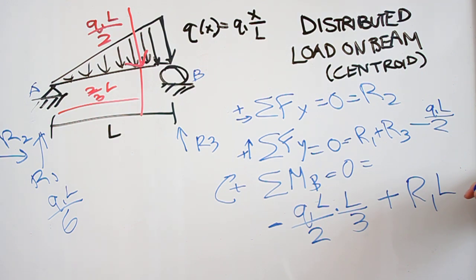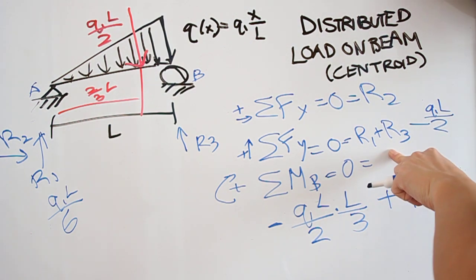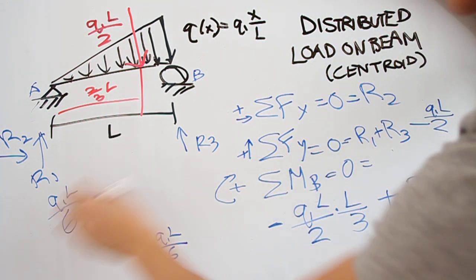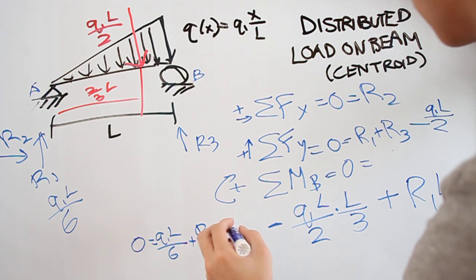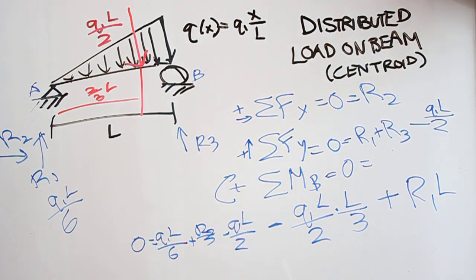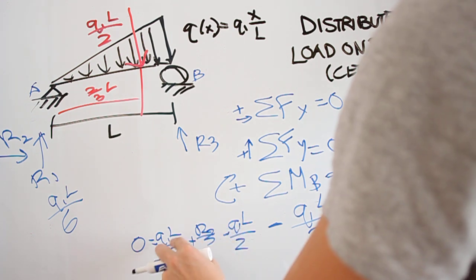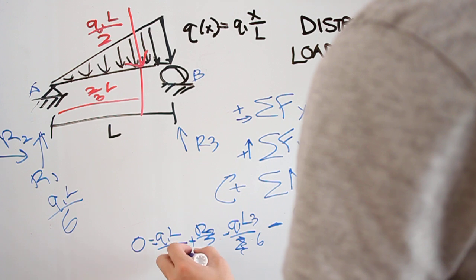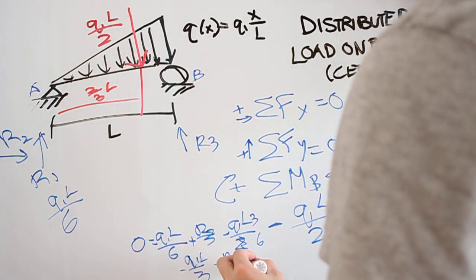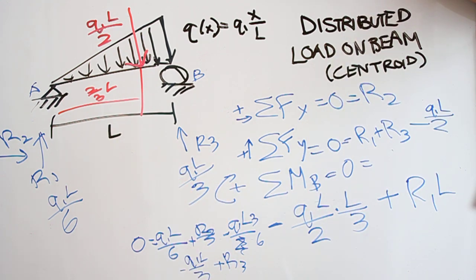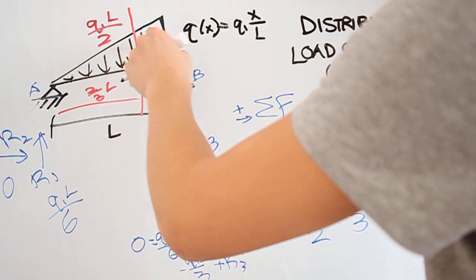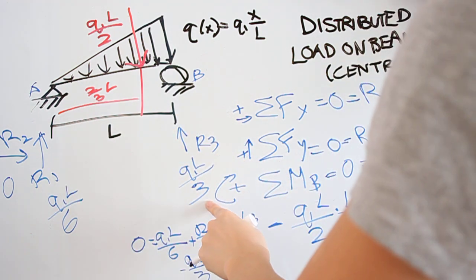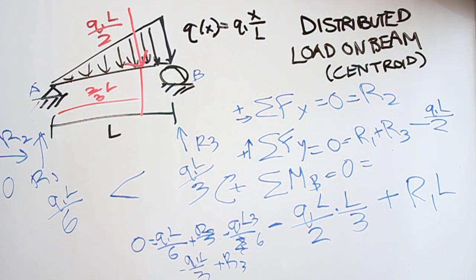Now we can solve for r3 by substituting back into the force equation. We have 0 equals q1L over 6 plus r3 minus q1L over 2, which simplifies to r3 equals q1L over 3. This makes sense intuitively: the distributed load gets larger toward point B, so the reaction there should be bigger — and indeed q1L over 3 is greater than q1L over 6.